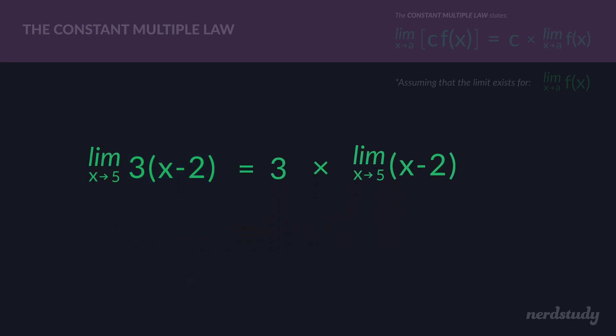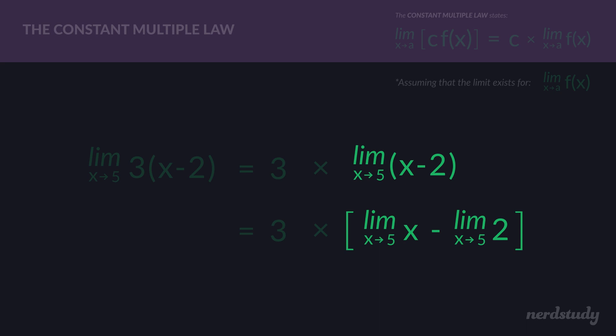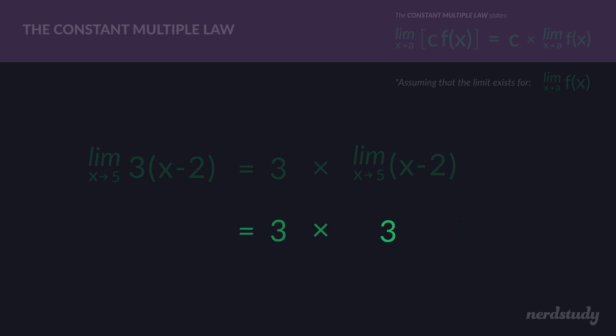What the constant multiple law says is you can take the multiplier out and do 3 times the limit of just the function, x minus 2. To find the limit as x approaches 5 for x minus 2, we use the difference law: the limit of x minus the limit of 2. The limit of x as x approaches 5 is 5, and the limit of the constant 2 is 2. So 5 minus 2 equals 3, giving us 3 times 3, which is 9.